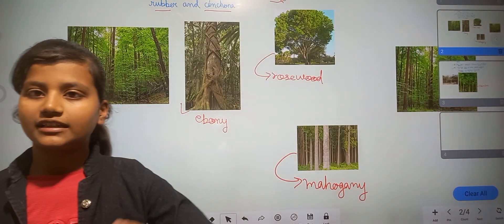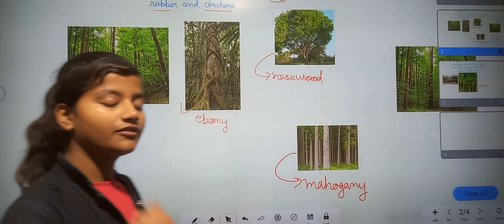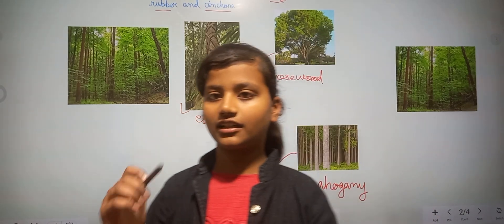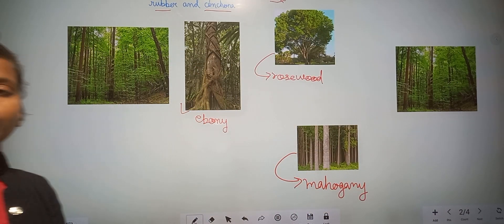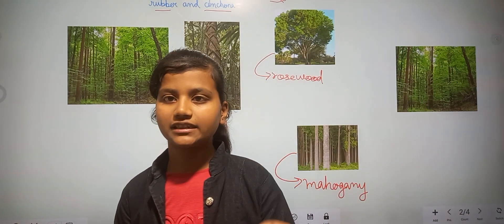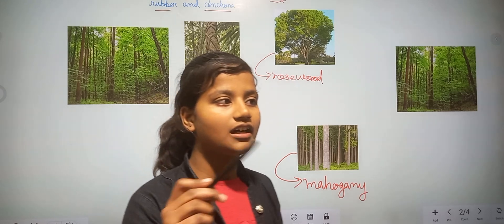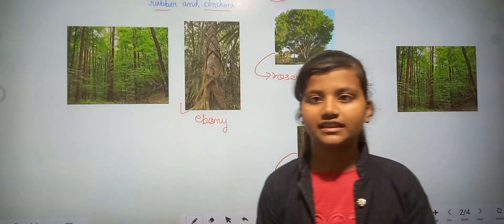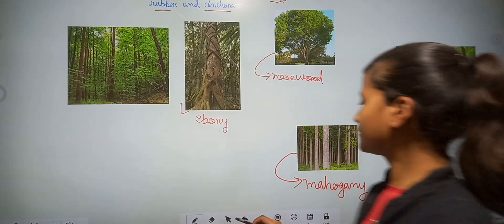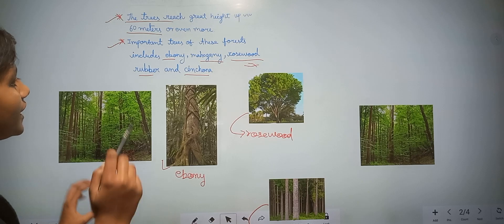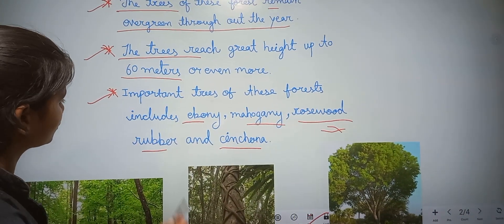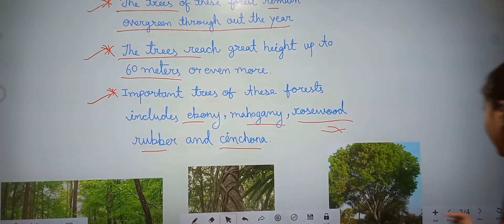Evergreen forest means the trees remain evergreen throughout the year. This forest receives 200 centimeters or even more of rainfall. But in the deciduous forest, it receives only between 70 and 200 centimeters of rainfall. Important examples of the evergreen forest are: ebony, mahogany, rosewood, rubber, and shisham.